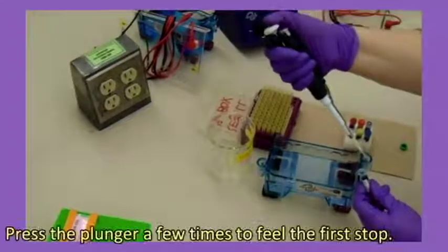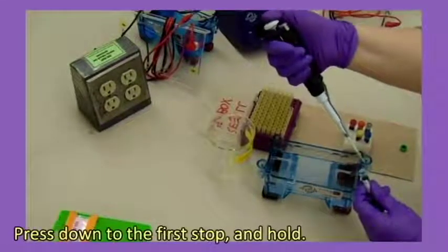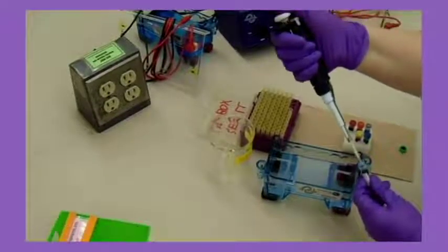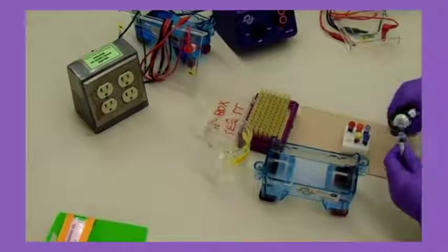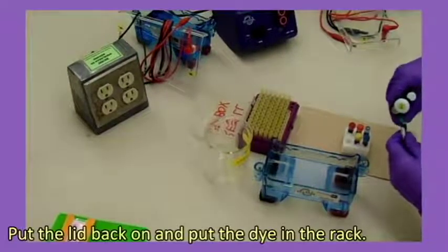Press the plunger down a few times to feel the first stop. Press the tip into the dye and release the plunger. Put the lid back on and put the dye in the rack.